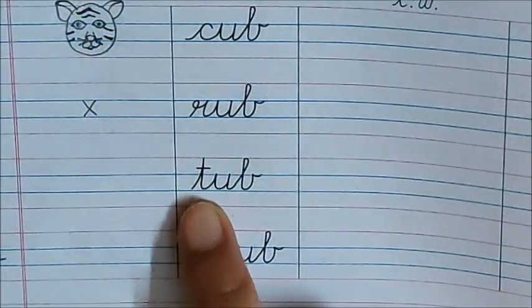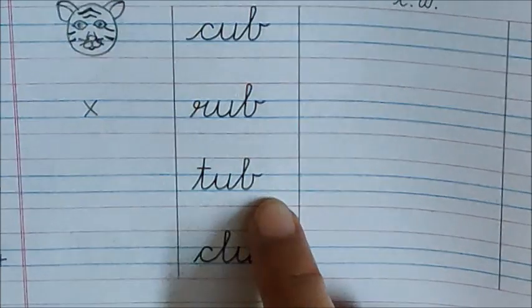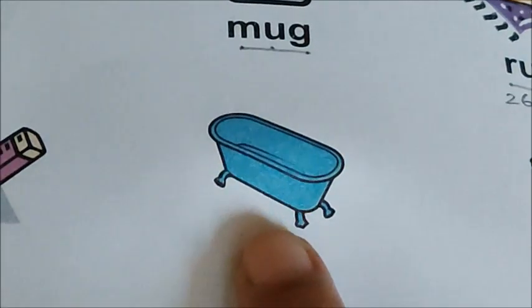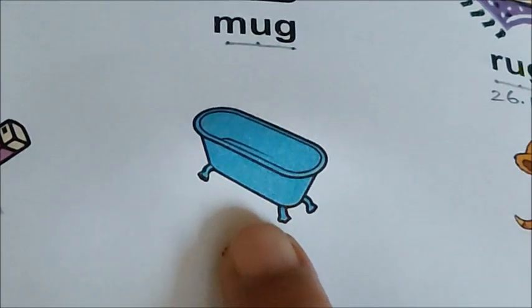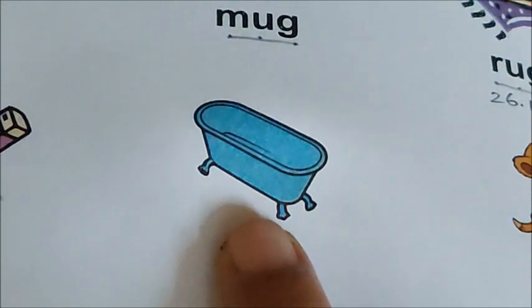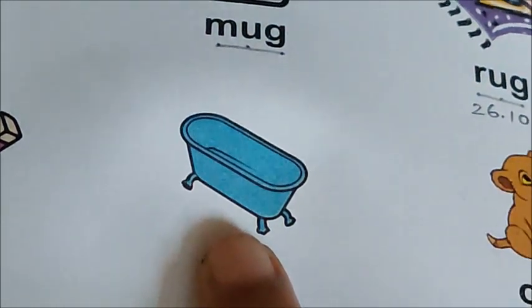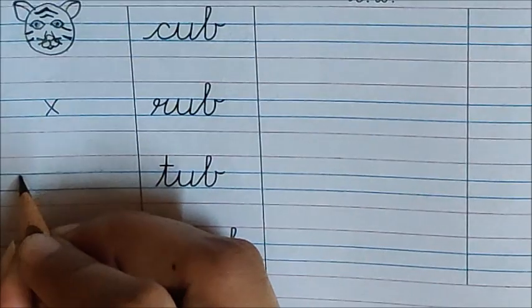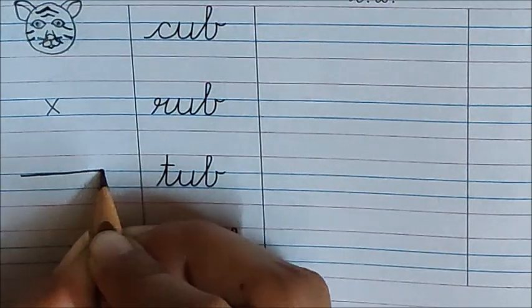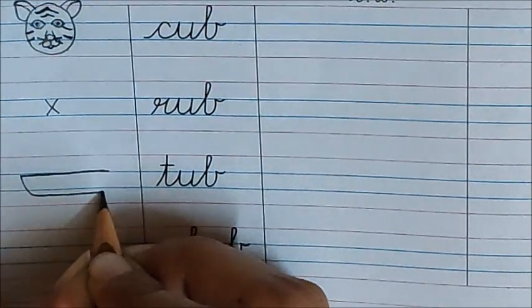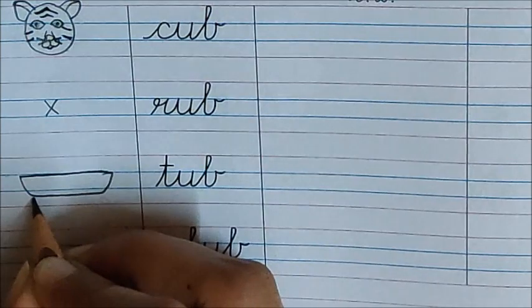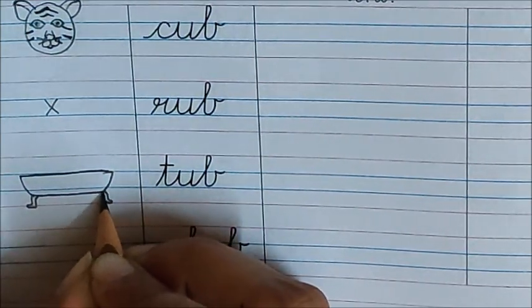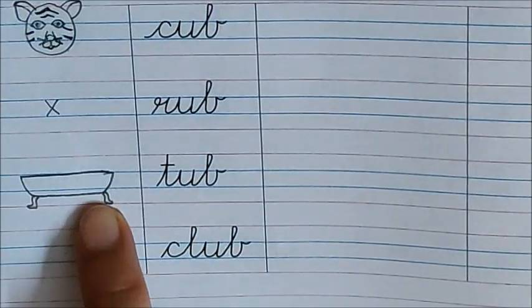Now read this word. T, U, B, Tub. You saw the tub picture in your reader. This is a tub. What do you do in a tub? You take a bath in a tub. Now let us draw this tub in our orange book. Make a sleeping line here. Now make a shape like this, and these are the legs of the tub. This is a tub.